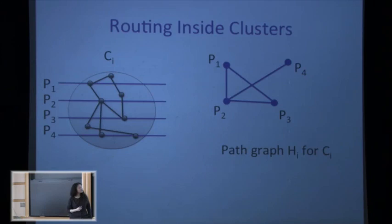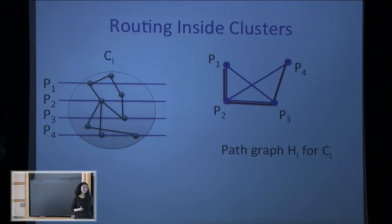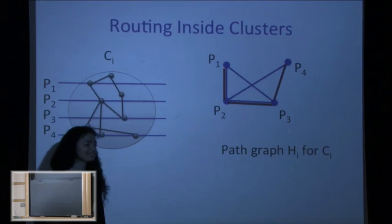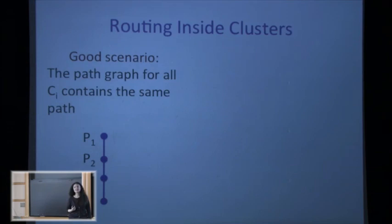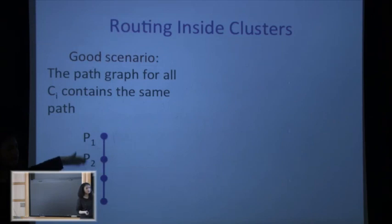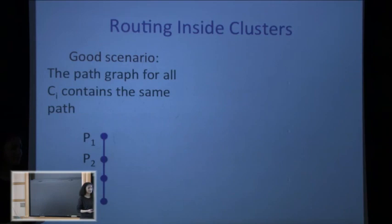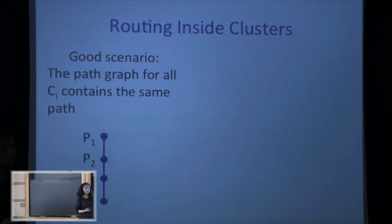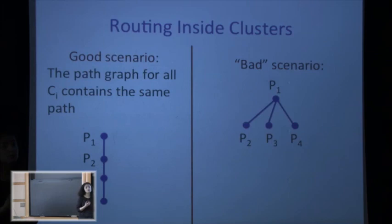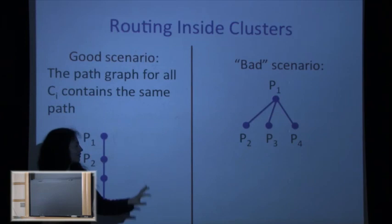The good scenario is that this graph has a Hamiltonian path p_1, p_2, p_3, p_4, …; if this happens for enough clusters, we are done. But the ordering might differ between clusters, and another worry is that the graph doesn't have a long path — for example, it might be a star. But actually the star case is not bad at all: if we remove the center vertex p_1 from our set of horizontal paths, then every remaining pair can connect directly, which is perfect.